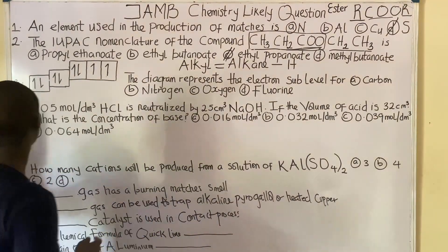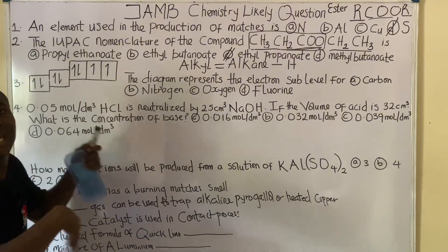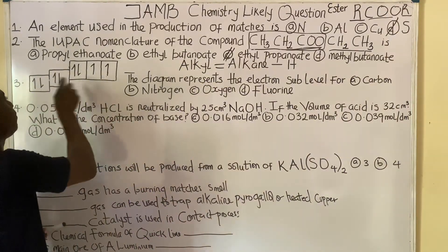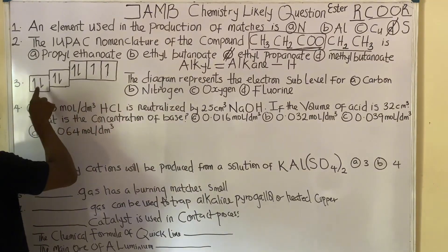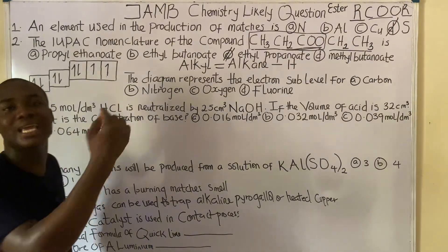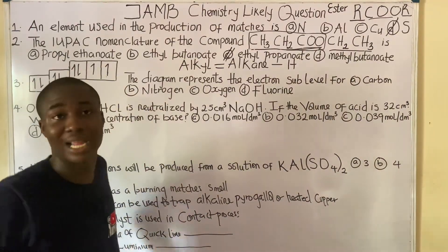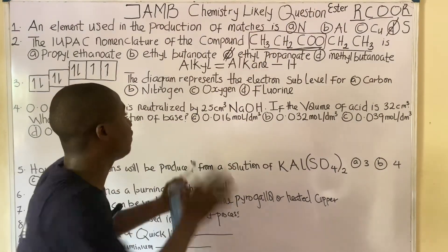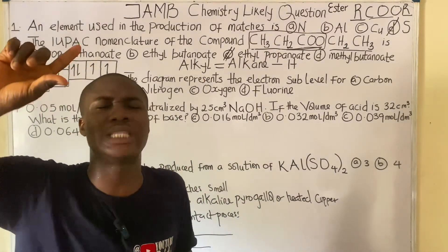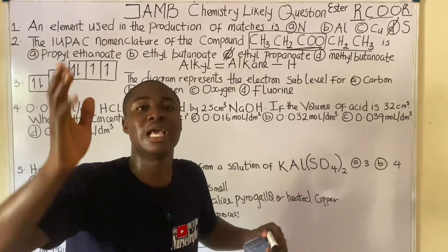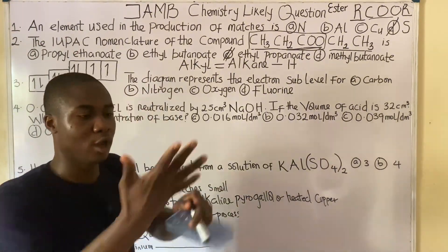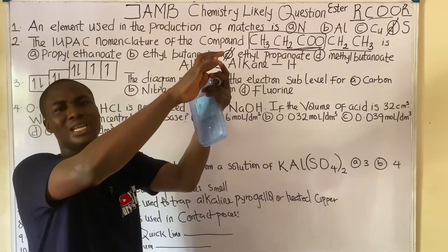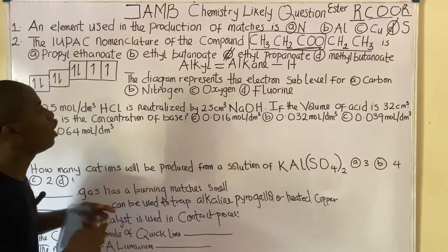Question three gives us a sub-energy level diagram and asks which element the diagram represents. This is very easy — first count the electrons shown. Counting all of them: one, two, three, four, five, six, seven, eight — I have eight electrons. So which element has eight electrons? For a neutral atom, proton number equals electron number.